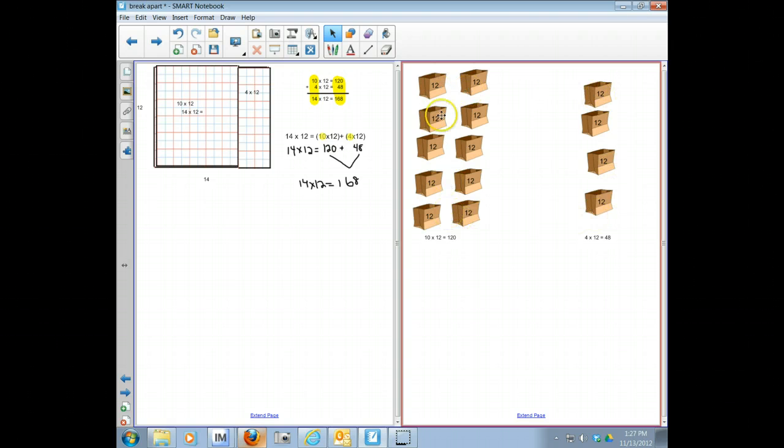What I did was I had 14 bags total, which was our original problem, 14 times 12. And I put a group of 10 over here, so this represents 10 times 12. And then I did a group of 4 over here, so this represents 4 times 12. So then what we have to do is we put these two together, the 120 and the 48, and we add them together and we have 168, which is our answer.